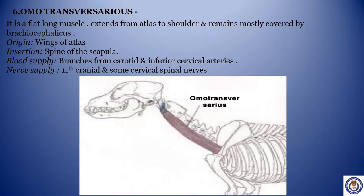Sixth: Omotransversarius. It is a flat, long muscle that extends from atlas to the shoulder and remains mostly covered by brachiocephalicus. Origin: wings of atlas. Insertion: spine of the scapula. Blood supply: branches from carotid and inferior cervical arteries. Nerve supply: 11th cranial nerve and some cervical spinal nerves.